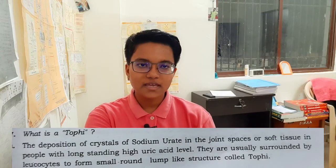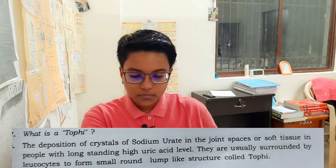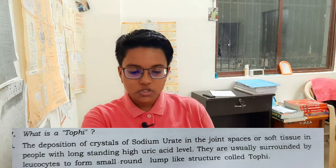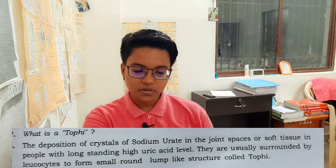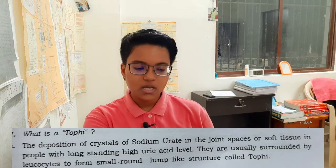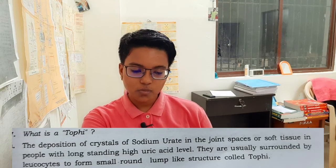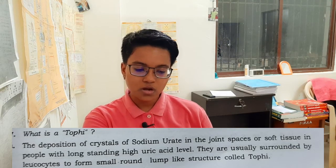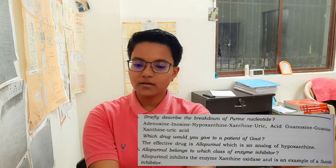What is Tophi? Tophi refers to the deposition of crystals of sodium urate in the joint spaces or soft tissues in people with a long-standing high uric acid level. They are usually surrounded by leukocytes to form a small, round, lump-like structure called Tophi.